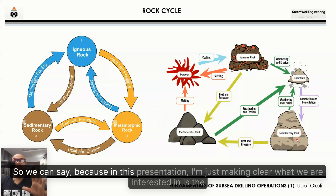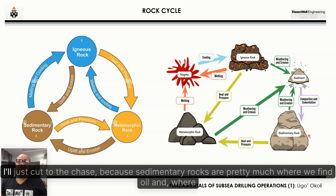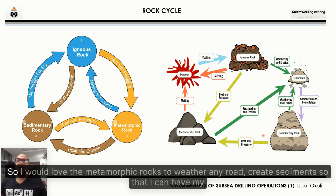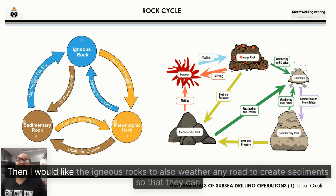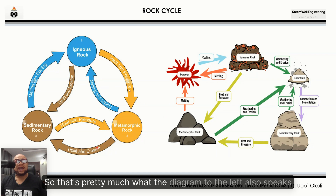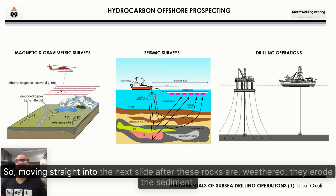What we are interested in is the sedimentary rocks, because sedimentary rocks are where we find oil and where hydrocarbons are deposited. I would like the metamorphic rocks to weather and erode to create sediments so that I can have sedimentary rocks. Likewise, the igneous rocks should weather and erode to create sediments which can compact with cementation to form sedimentary rocks. That's what the diagram on the left also illustrates.